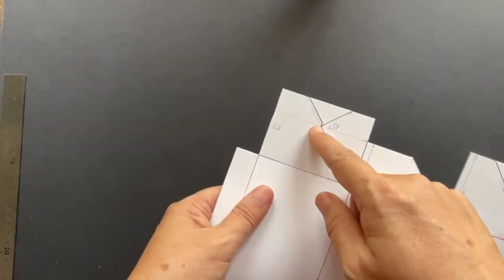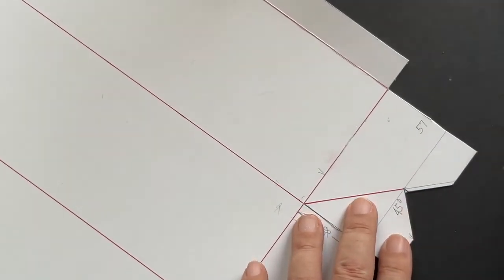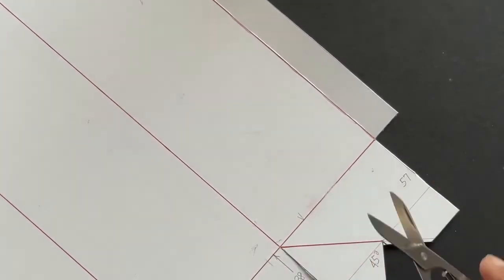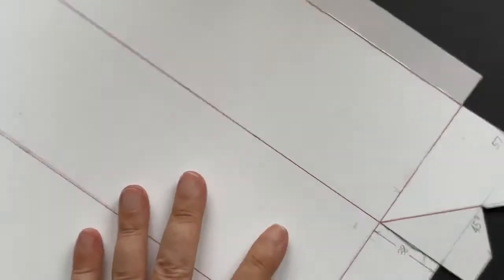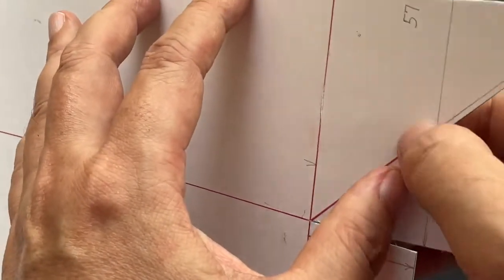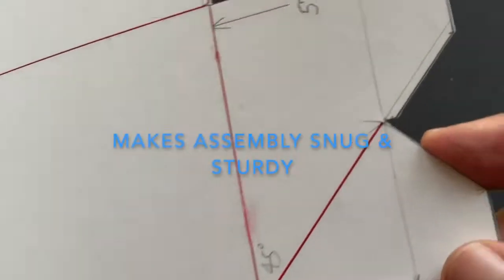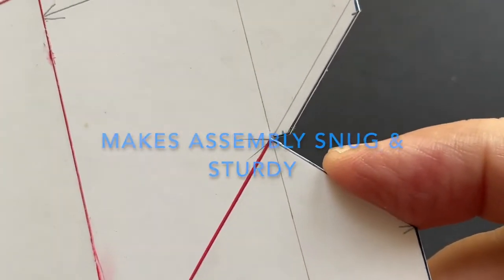I left these two portions unfinished to show you how it's done. Use a sharp blade to cut out this small triangle. Then use a pointed tip scissor such as one you get from a Swiss knife and cut the small notch. This notch feature helps with the snugness and sturdiness when collapsing and expanding the box.